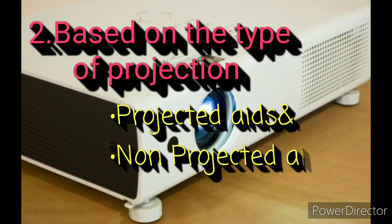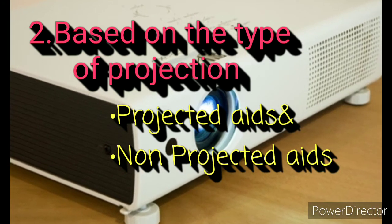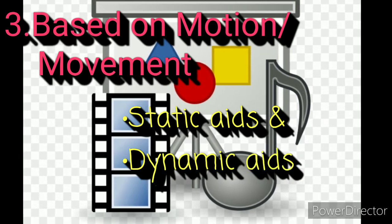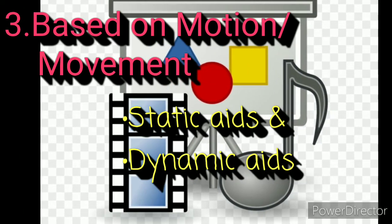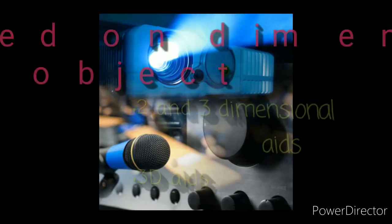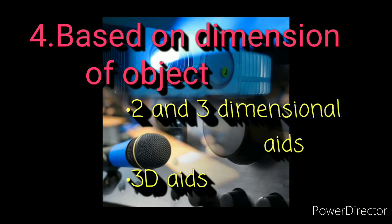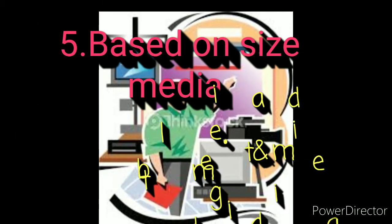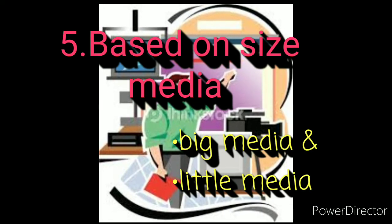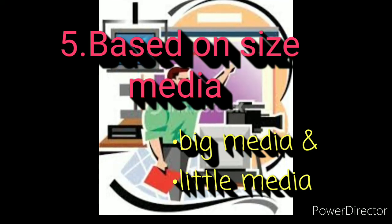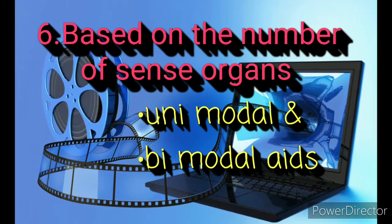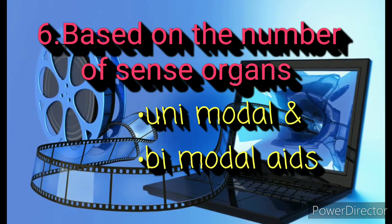Two, based on the type of projection — projective aids and non-projective aids. Three, based on motion or movement — static aids and dynamic aids. Four, based on dimension of the object — two-dimensional aids and three-dimensional aids. Five, based on size of media — big media, which includes computer and television, and little media, which includes radio and film. Last, based on the number of sense organs used — unimodal and bimodal aids. They can also be classified as electronic and non-electronic.